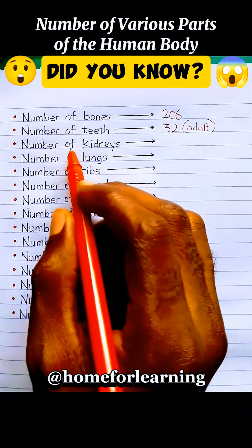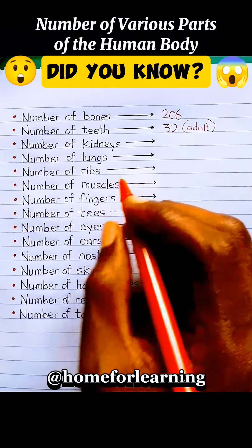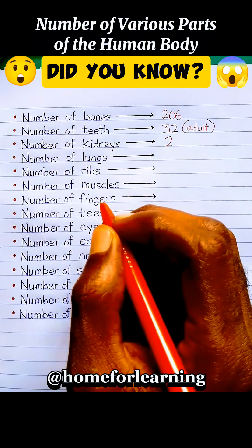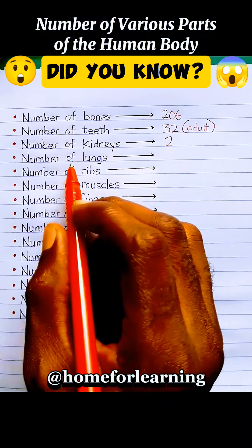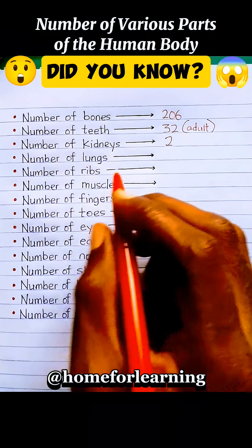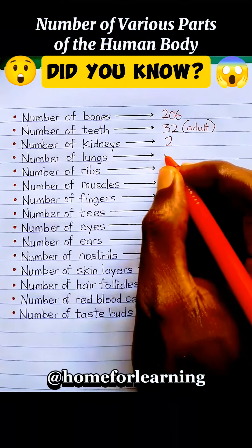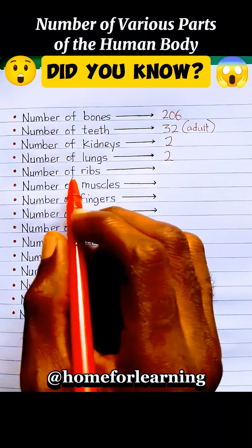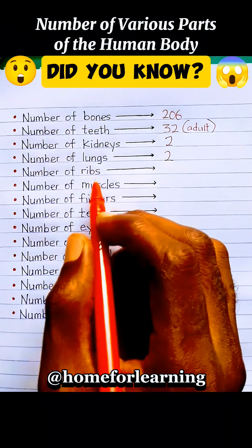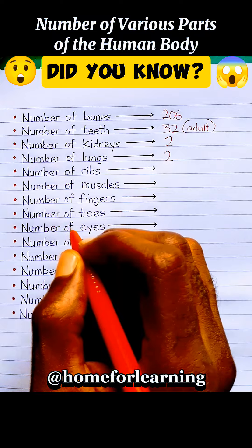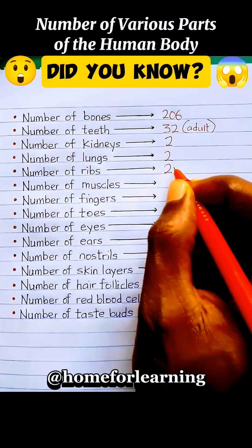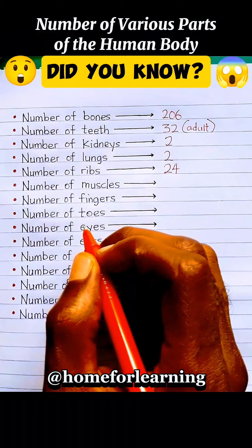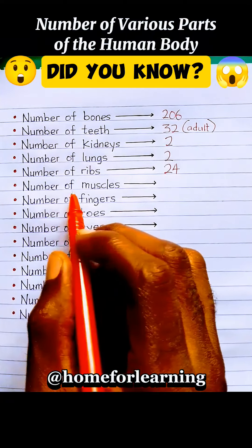Number of kidneys: the number of kidneys is two. Number of lungs: the number of lungs in the human body is also two. Number of ribs: the human body has 24 ribs.